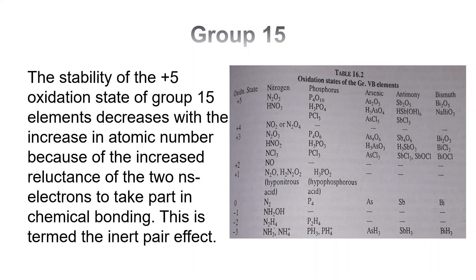Such a pair of s-electrons in the outermost quantum level must be unpaired by supplying sufficient energy before they can participate in bonding. The amount of energy required to unpair these two ns electrons increases gradually from nitrogen to bismuth. In bismuth, it becomes so high that it can be supplied only in a reaction with oxygen, the energy of formation of the bismuth-oxygen bond being very high.